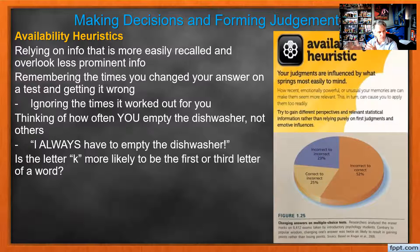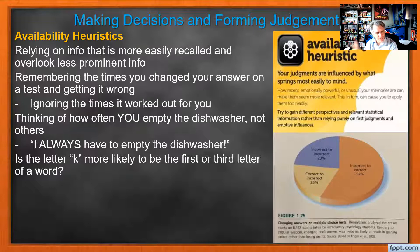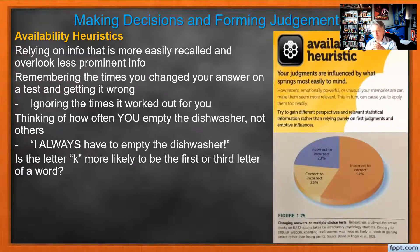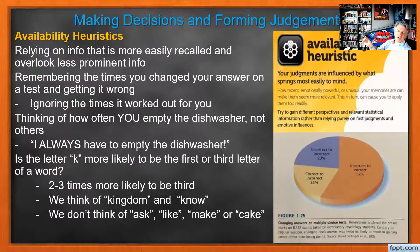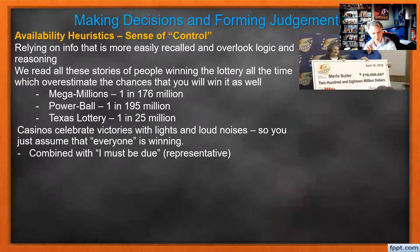If I were to ask you whether the letter K is more likely to be the first or third letter of words in a random paragraph, most of us would think it's the first letter — we think of knock, kingdom, knight. But if you think of the third letter, words like like, bike, hike, tyke — there are a lot of words with K as the third letter. As a matter of fact, those are more commonly used words, and you're two to three times more likely for a random paragraph to have K as the third letter than the first. We have this sense of control that we really shouldn't, and we rely on information that's more easily recalled.